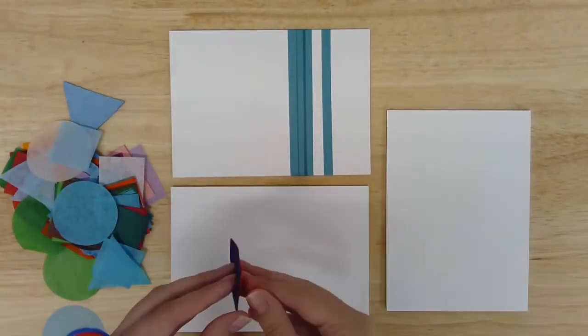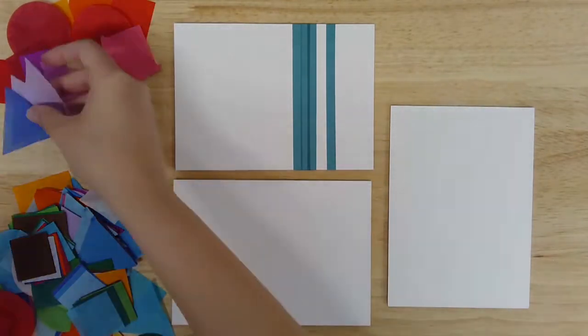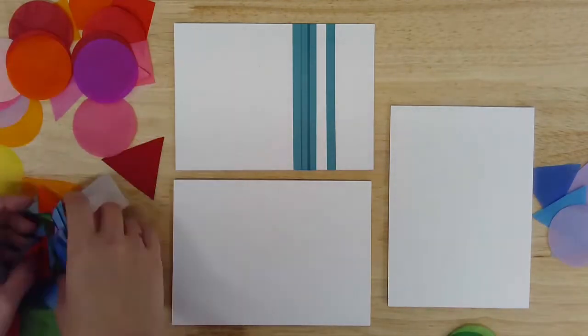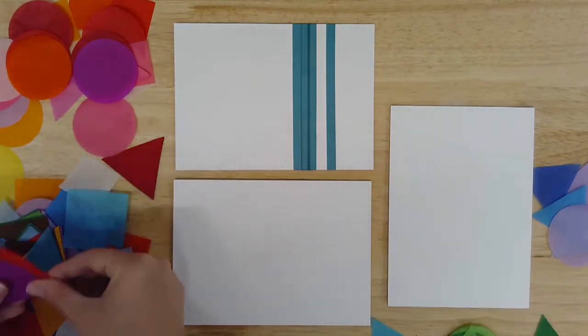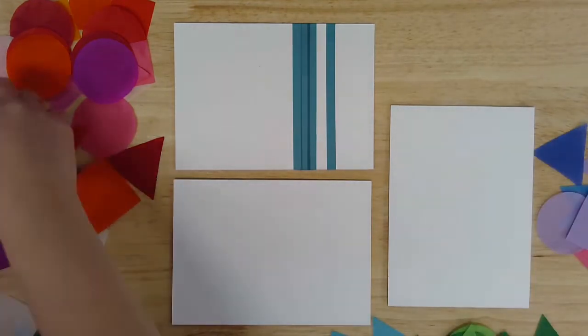Once you've finished preparing your canvas, open up your bag of watercolor tissue and experiment with some of the shapes and colors until you find some you like. Keep in mind that whatever colors you choose will bleed into each other once we add water, so mixing too many different colors might result in a muddied effect.